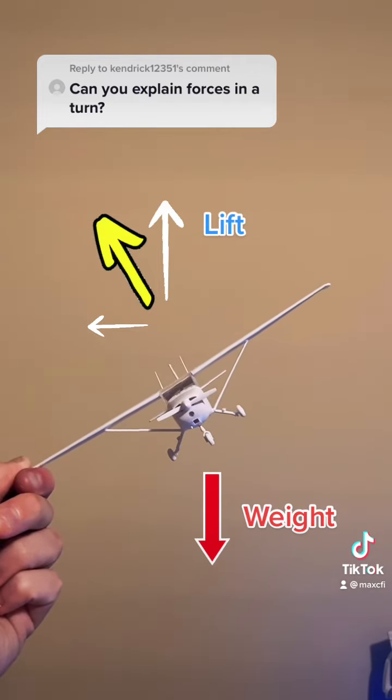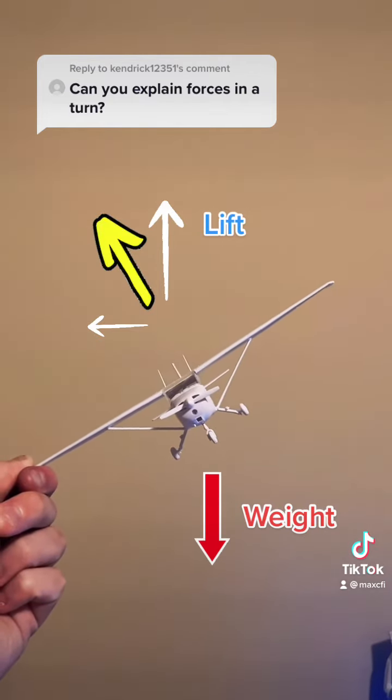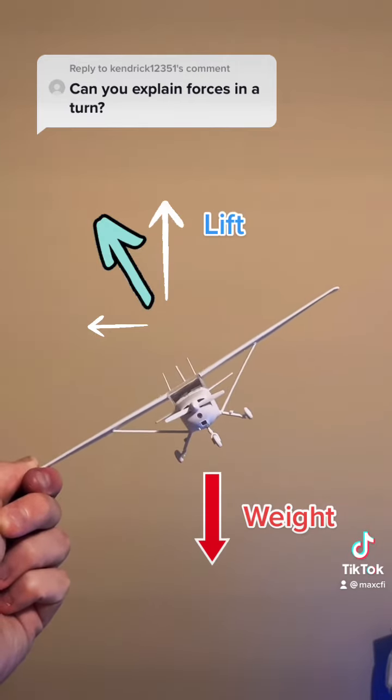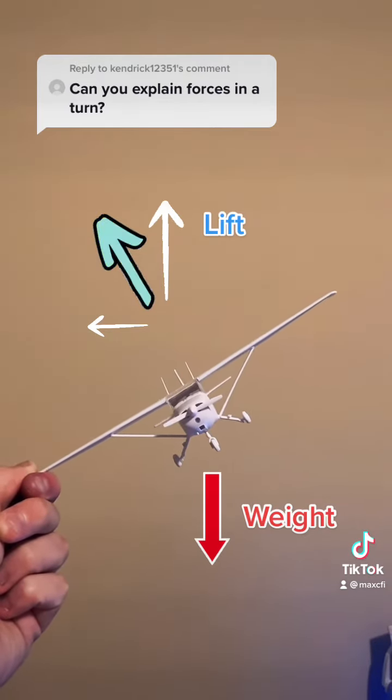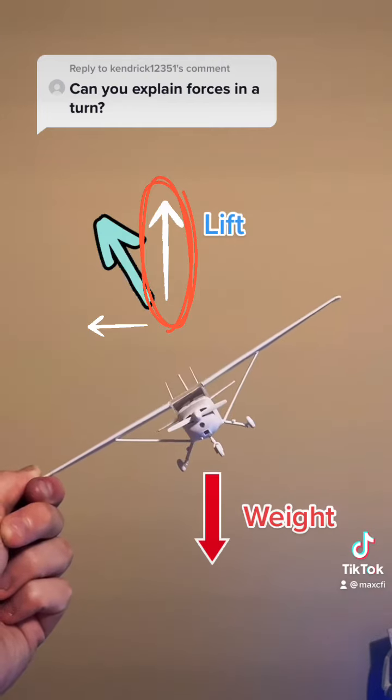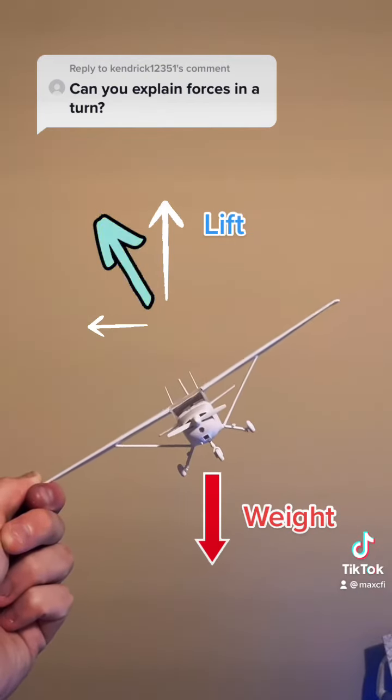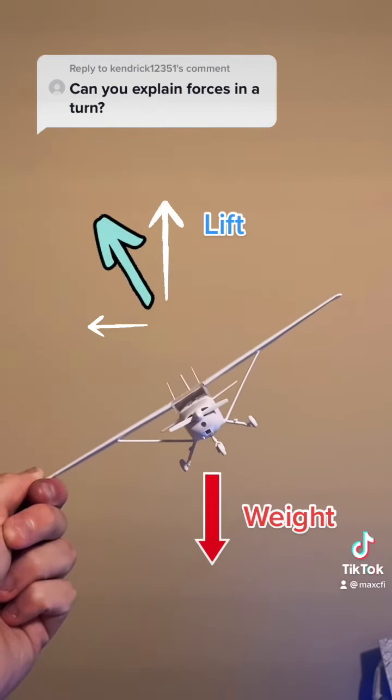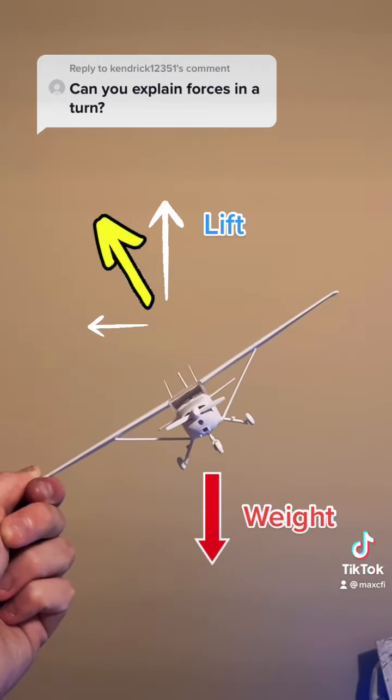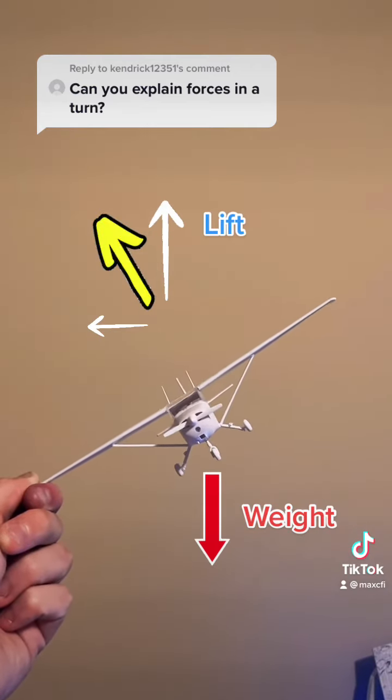The greater the bank angle, the more lift is pointing to the side and the faster the airplane turns. Since less than the total lift is now acting upward to oppose weight, some elevator back pressure is necessary to increase the angle of attack and the total amount of lift produced. Otherwise you'll lose altitude in the turn.